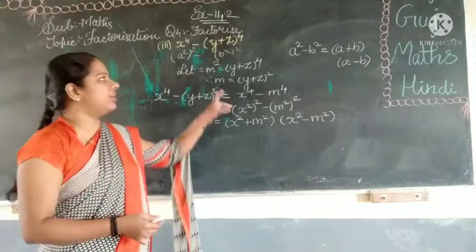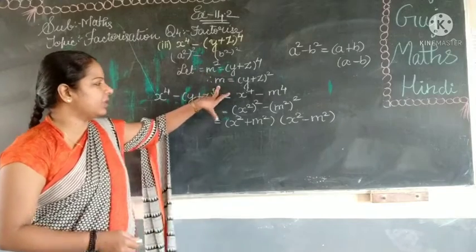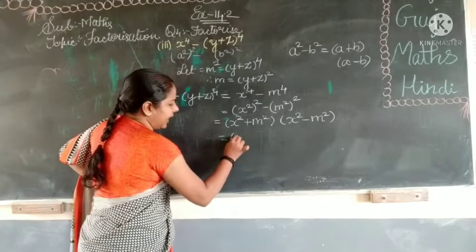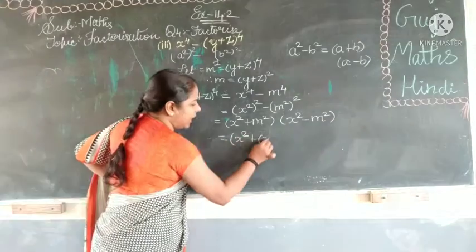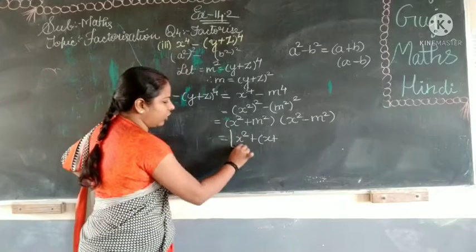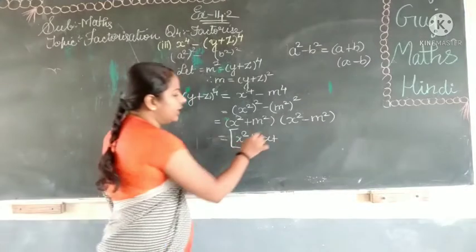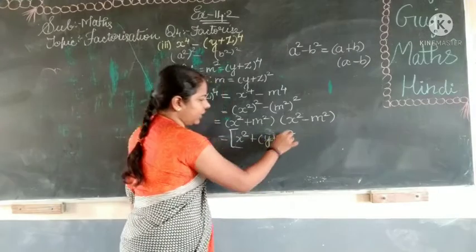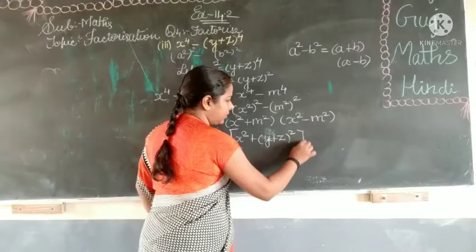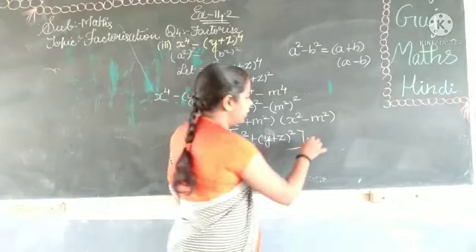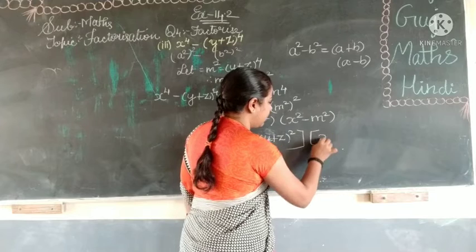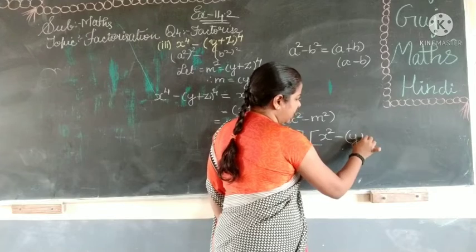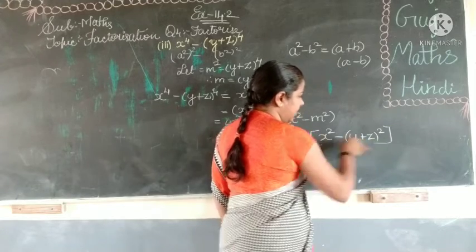Then we will be distributing the value. What is the value of m? x square plus y plus z. When you are using the bracket, use square bracket. Two brackets are there. x square plus y plus z, the whole square. Then bracket close. And once again, what you will write here? x square minus bracket y plus z, the whole square.